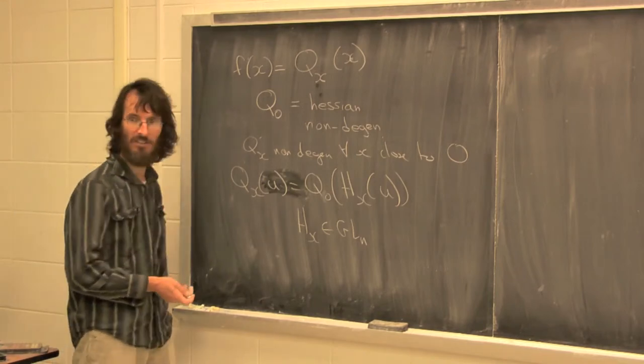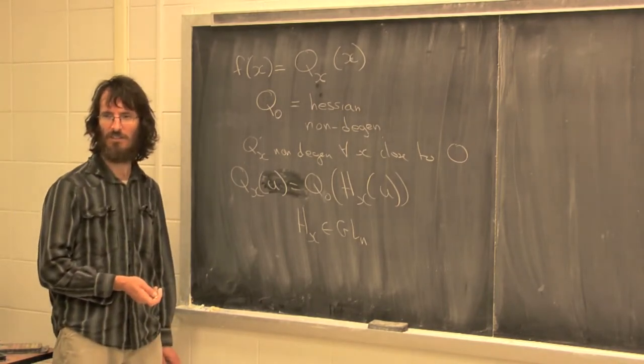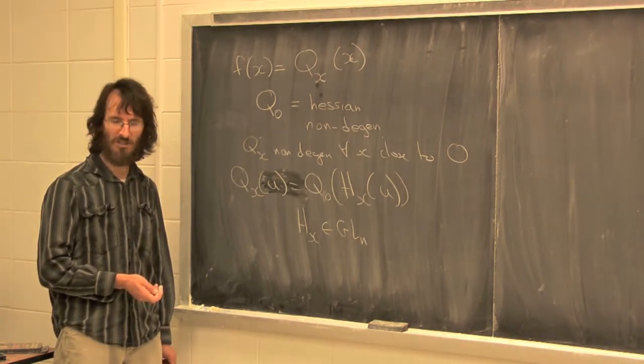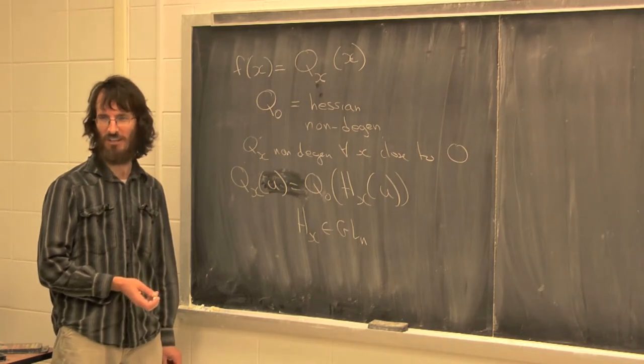The reason for that is if you think about the action of GL_n on the vector space of quadratic forms, it has various orbits, and the non-degenerate ones are open orbits. They're basically just given by the signature — the number of minuses and pluses when you diagonalize. So any two with the same signature are linearly equivalent.